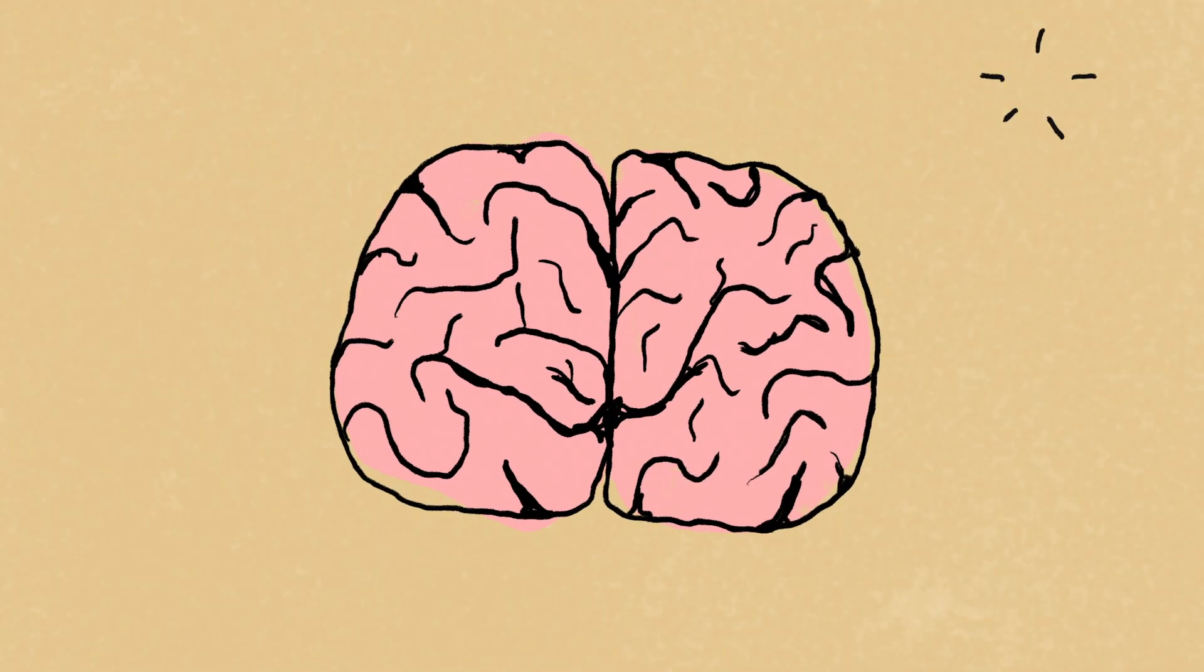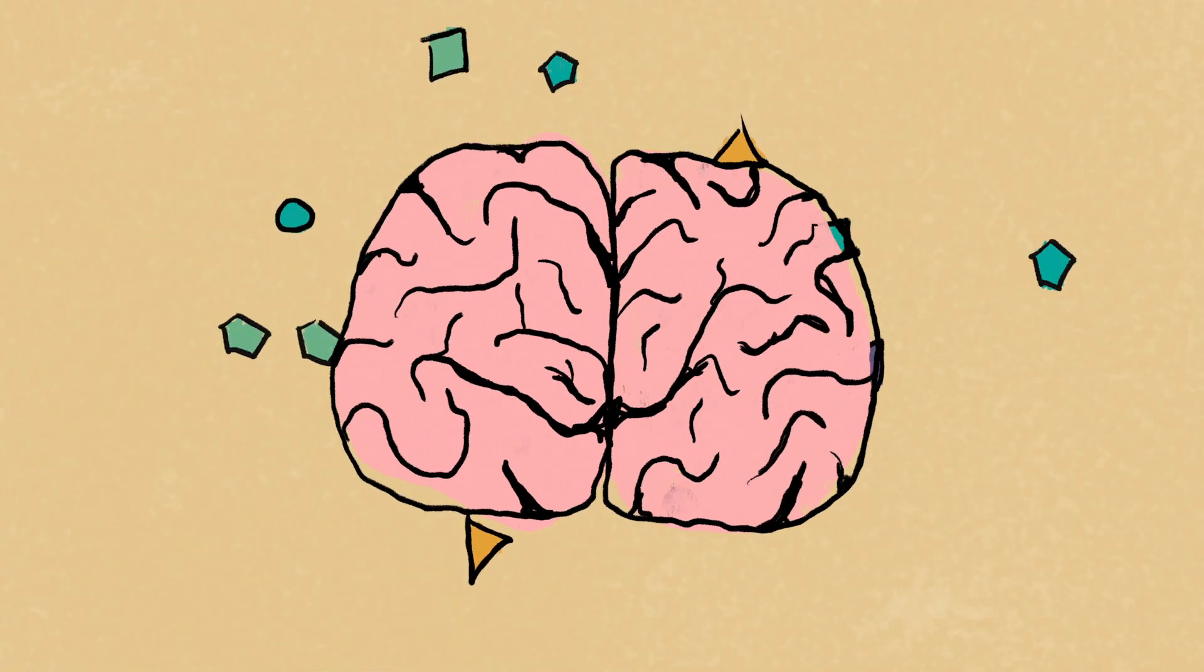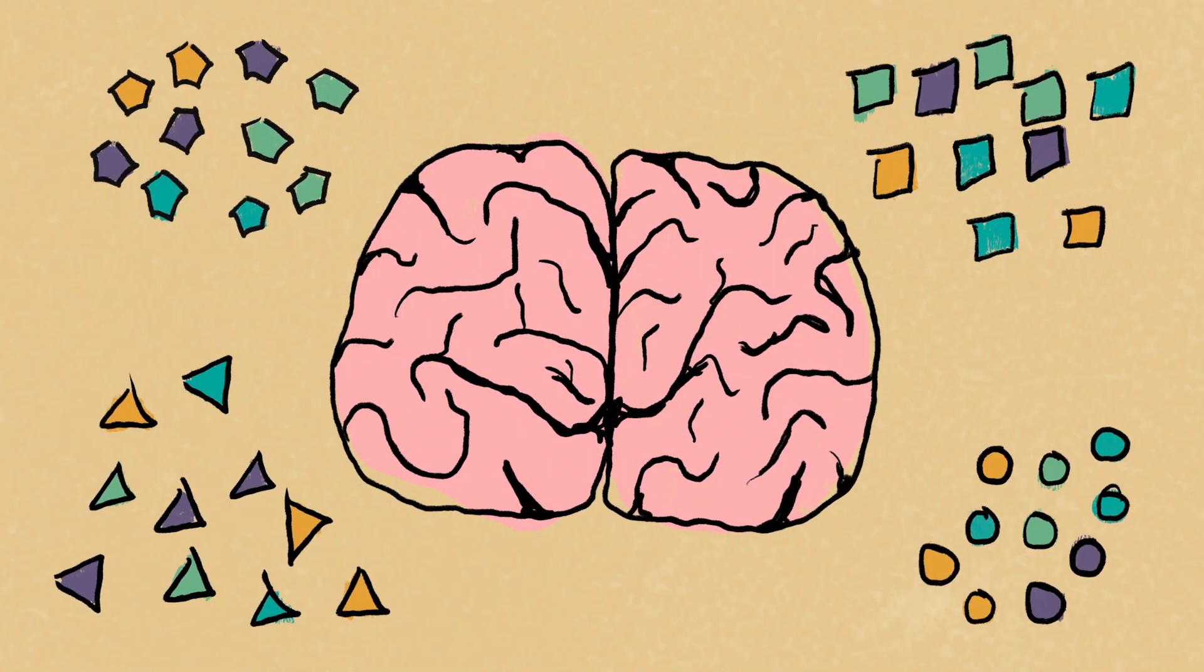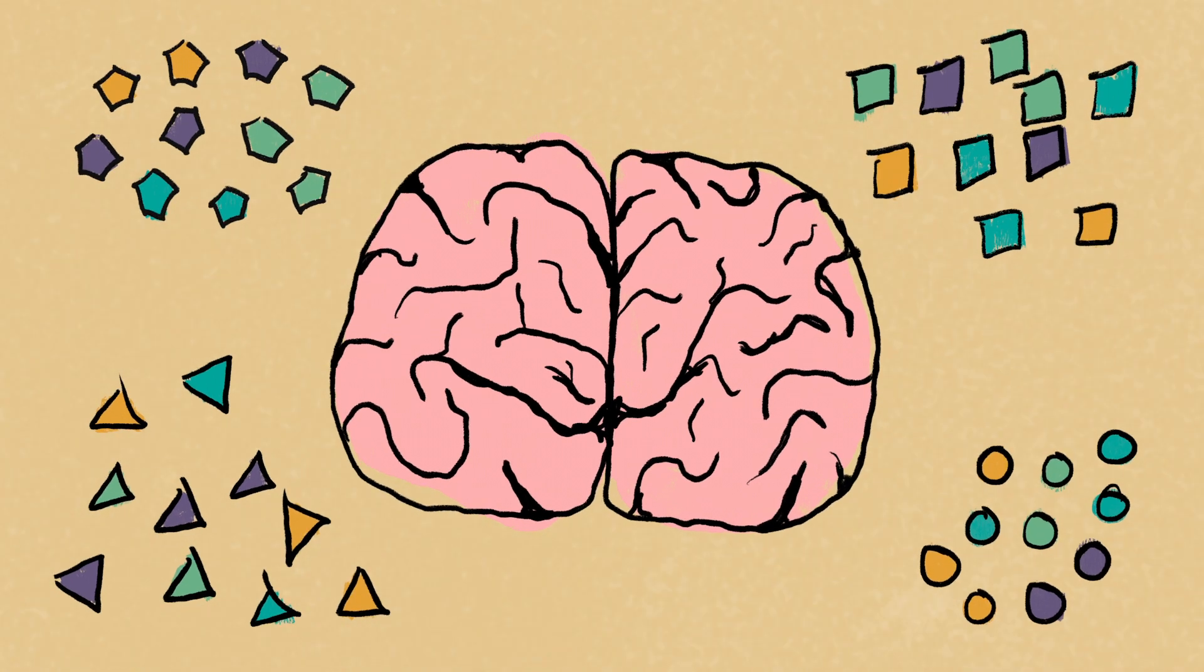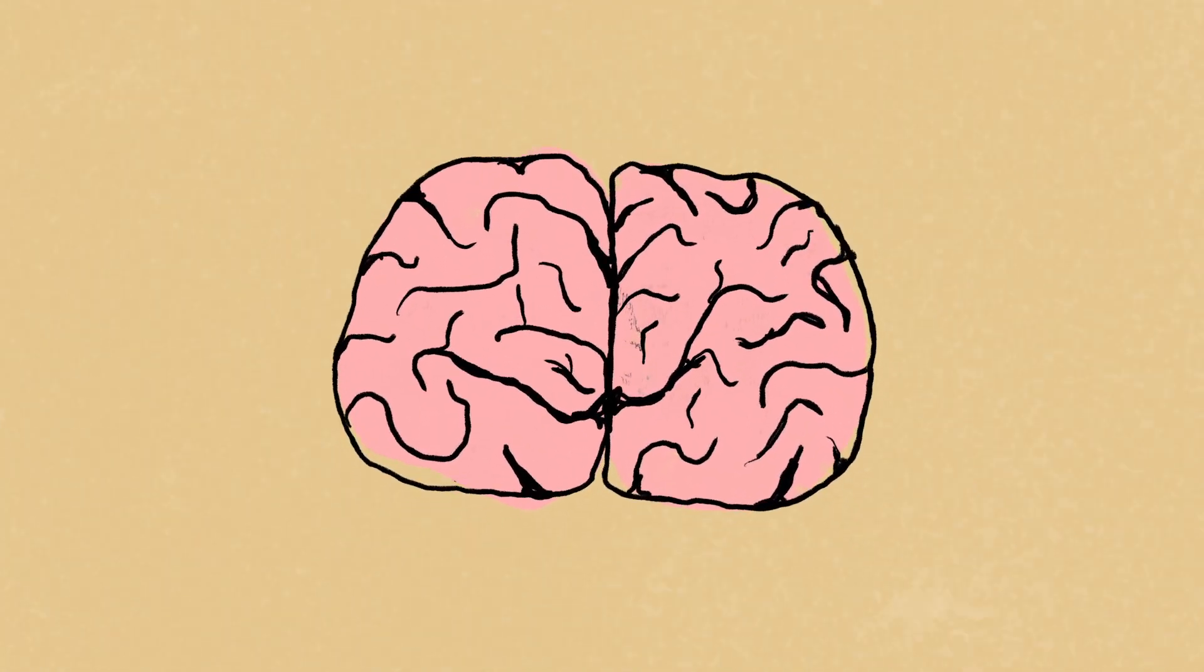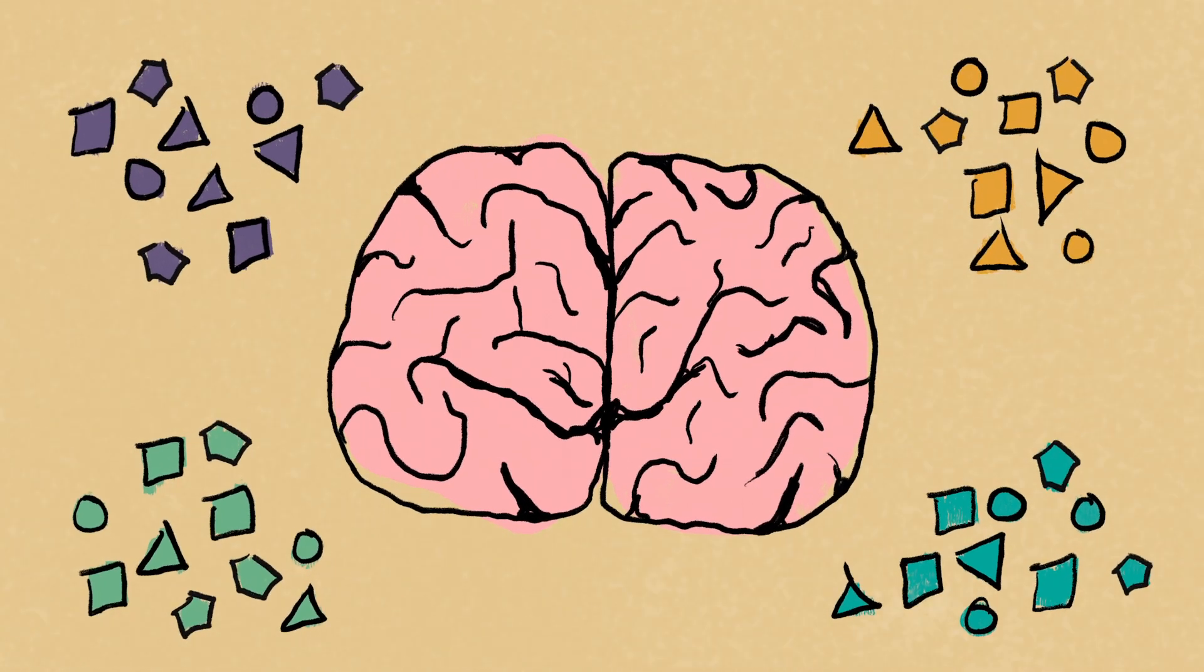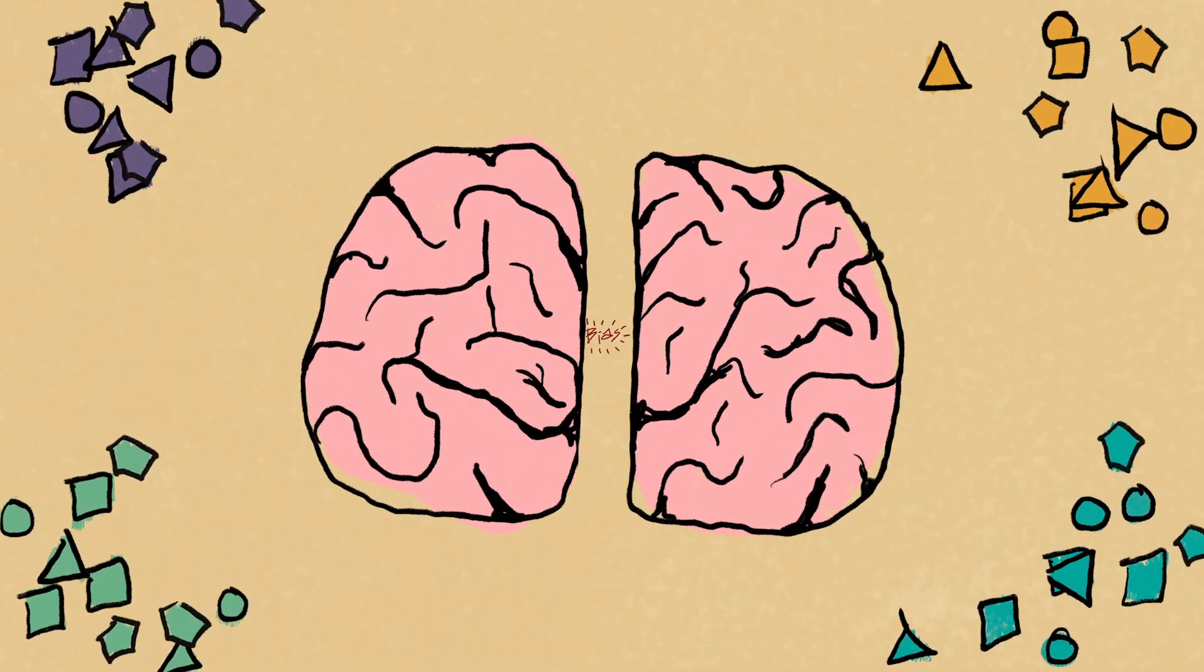The human brain is a wonder, capable of making meaning from a constant barrage of information. To do this, the brain relies on shortcuts that notice patterns and group things into categories. These shortcuts often happen below our consciousness, sorting through all that stuff, mixing with our life experiences and cultural influences to form what we call biases.